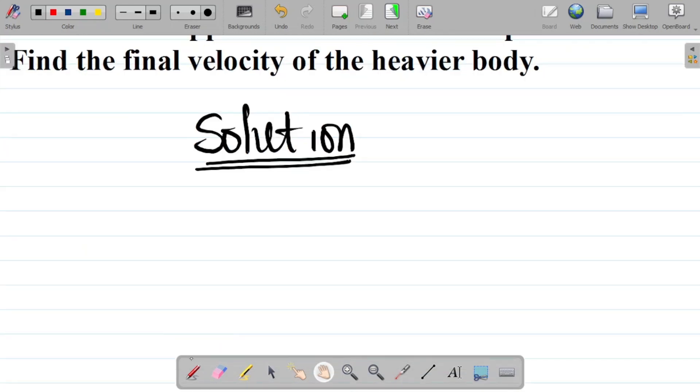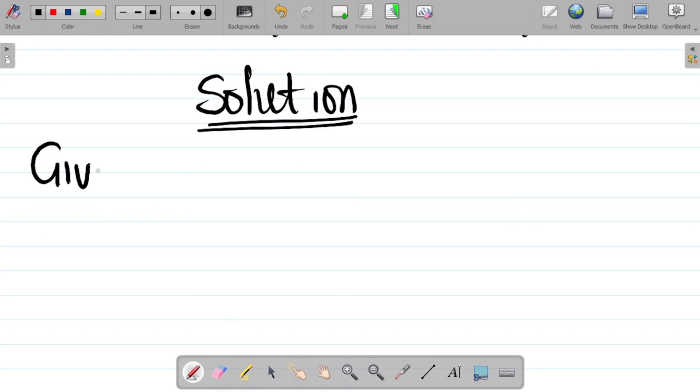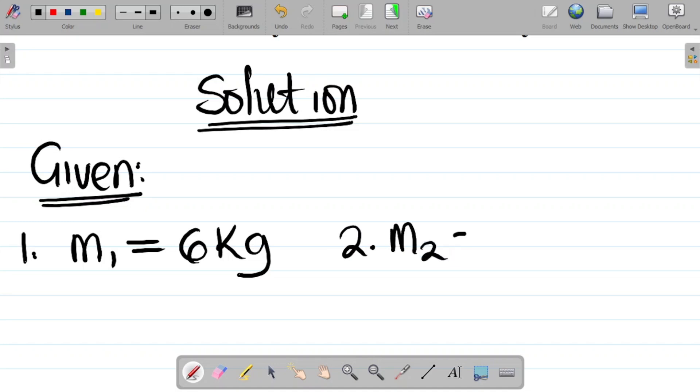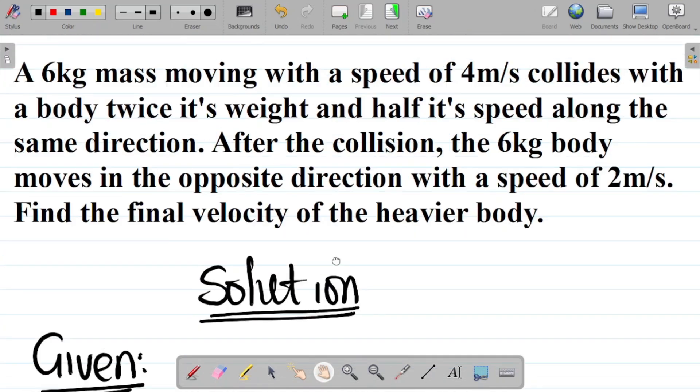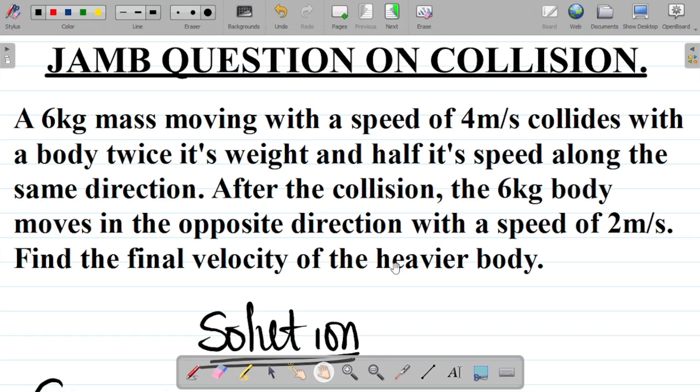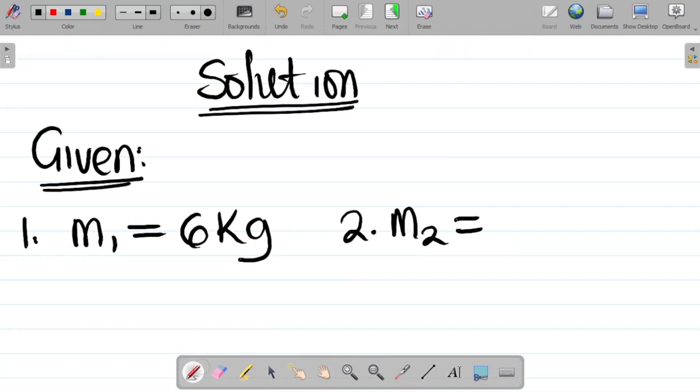So what this means is that we have given, number one, mass m1 equals 6 kg. Number two, we have the second mass m2, and the question says with a body twice its weight. Twice its weight will also mean twice the mass, that means 2 times m1, which is 2 times 6 equals 12 kg.